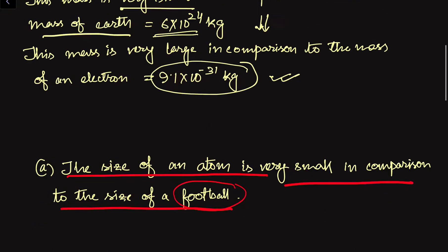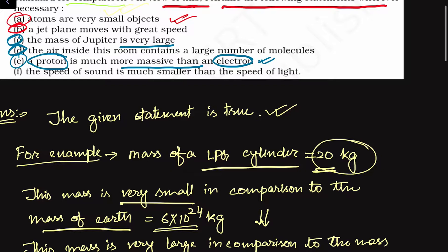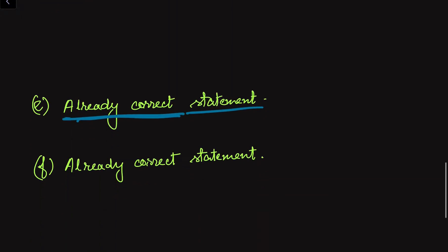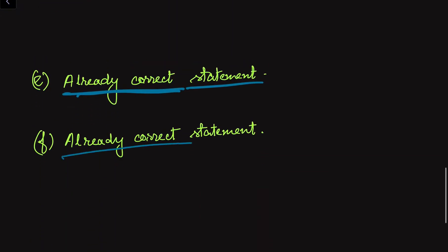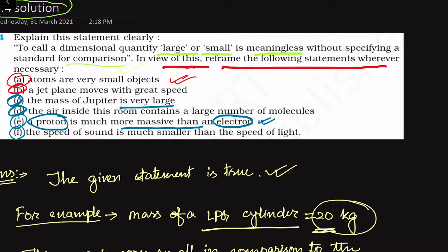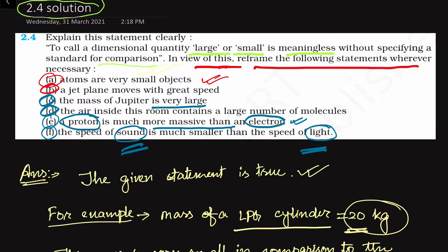Now let us see the sixth part. We are given that the speed of sound is much smaller than the speed of light. This is already a correct statement, as we are given the comparison: the speed of sound is smaller than the speed of light. We have compared the speed of two quantities — sound and light. So in this way, we can give statements in comparison to some standard quantity.